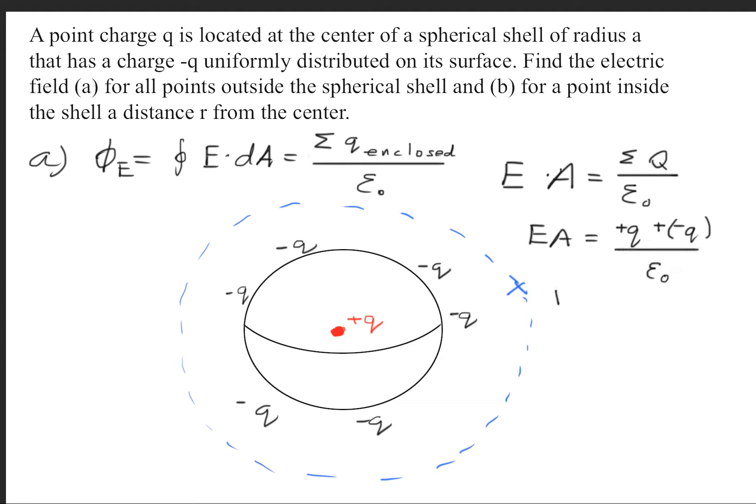If we continue, we notice that this becomes zero. Therefore, the electric field at points outside of this sphere, so points all around over here, will have no electric field at those points.